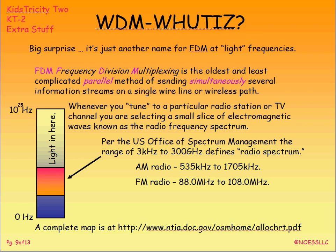Wave division multiplexing — here's the big surprise: it's just another name for frequency division multiplexing, but we're going to use light. Most of us think of light as something you can see, but light in this case means a wider range of frequencies. Frequency division multiplexing is the oldest and least complicated parallel method of sending simultaneous information streams on a single wire line or wireless path — meaning copper, twisted pair, coax, or radio.